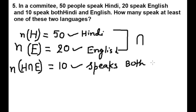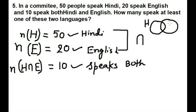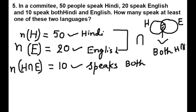Let me explain with a diagram. Let's suppose this is set H, the Hindi speaking people, and this is set E, the English speaking people. This middle part represents people who speak both languages — Hindi and English — this is H intersection E, which equals 10.